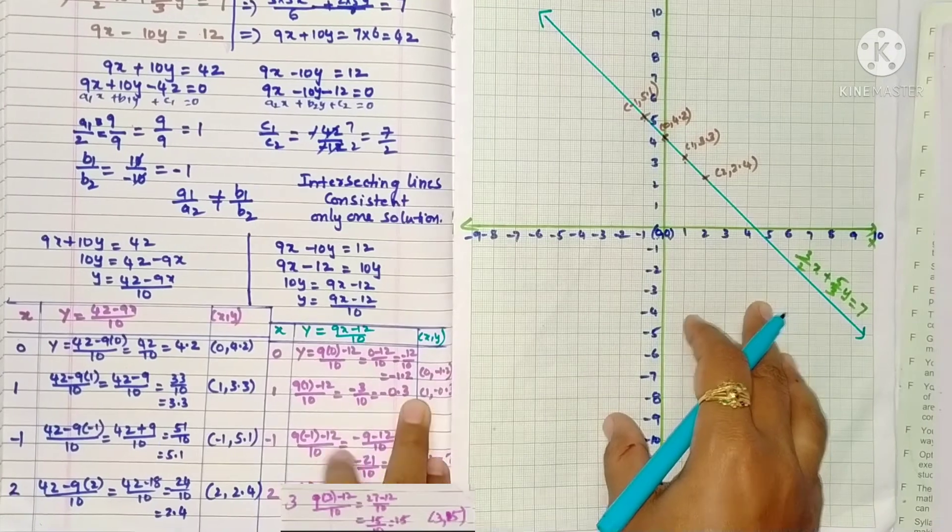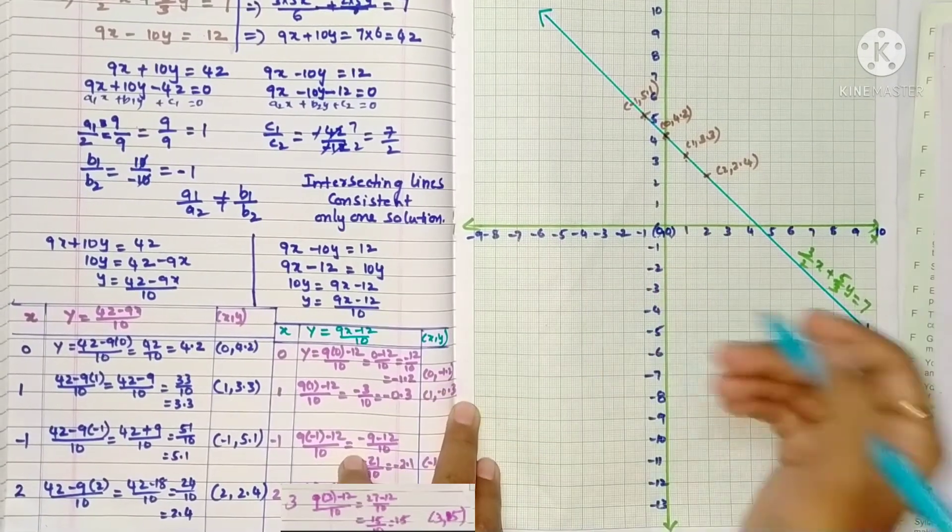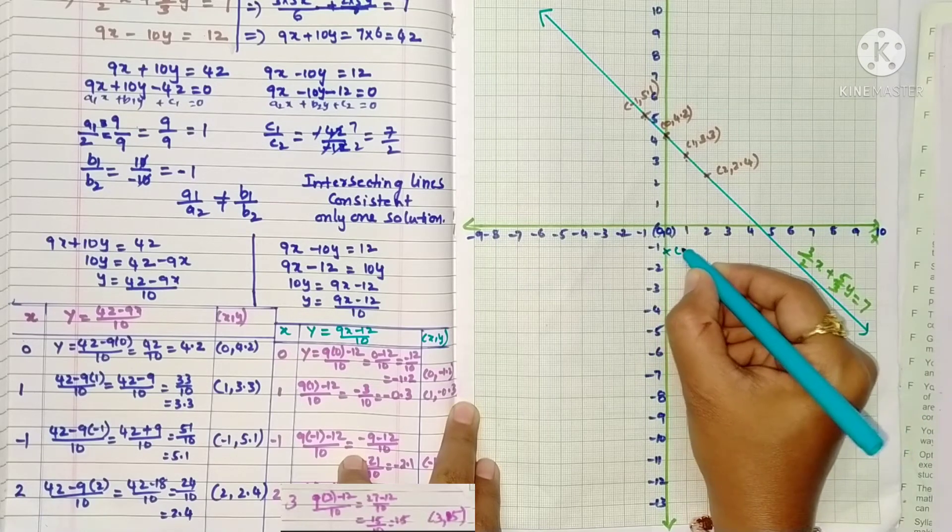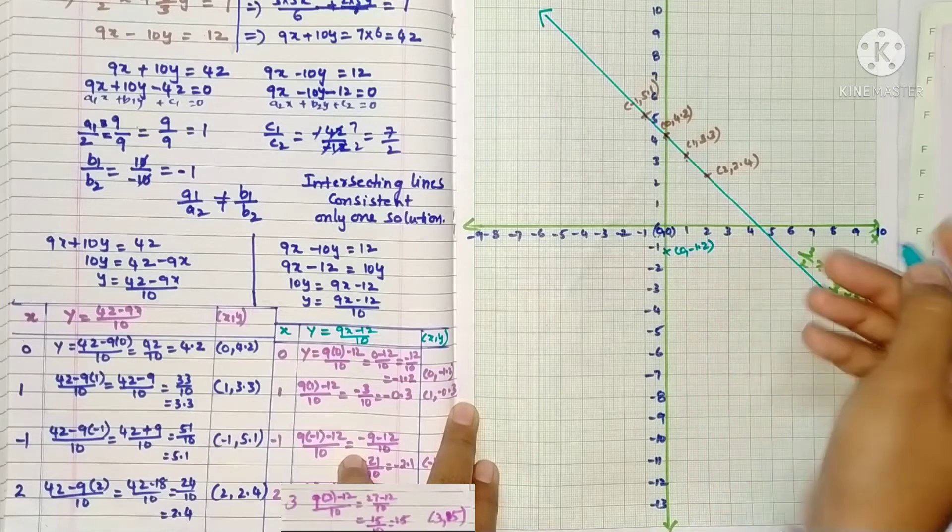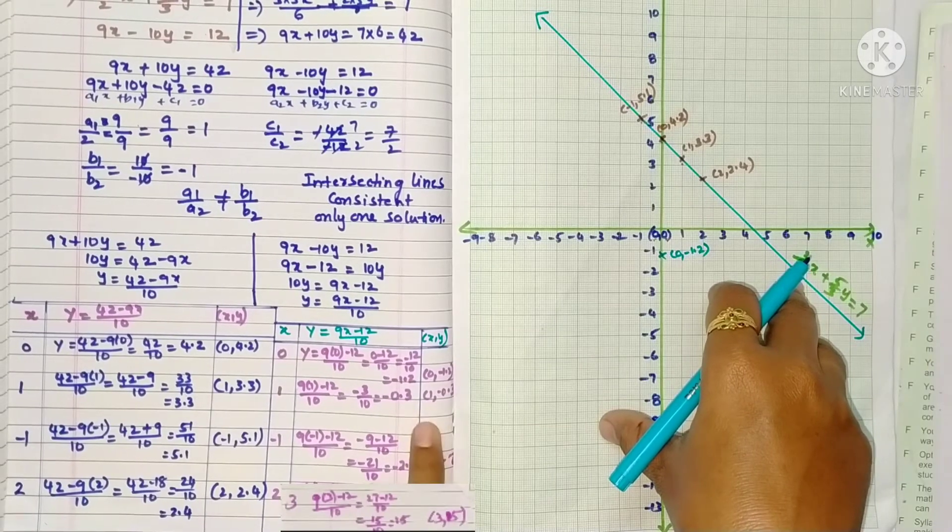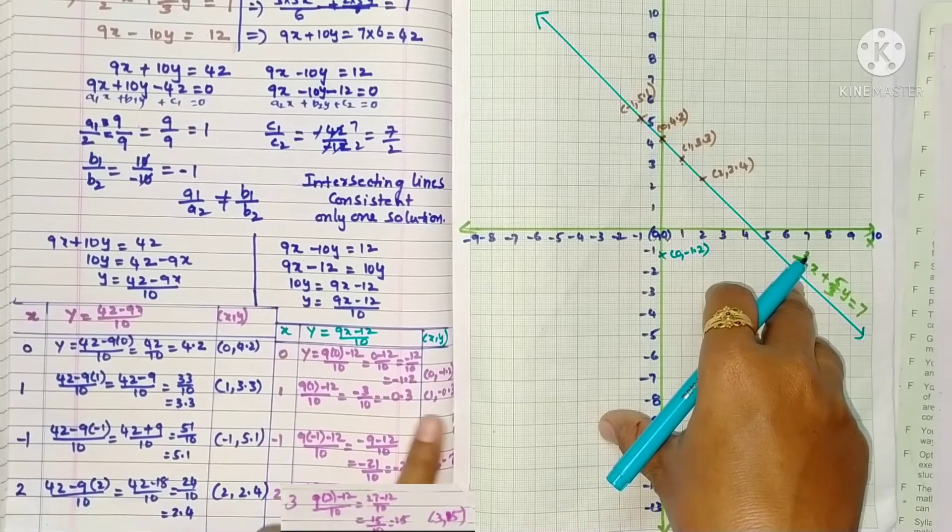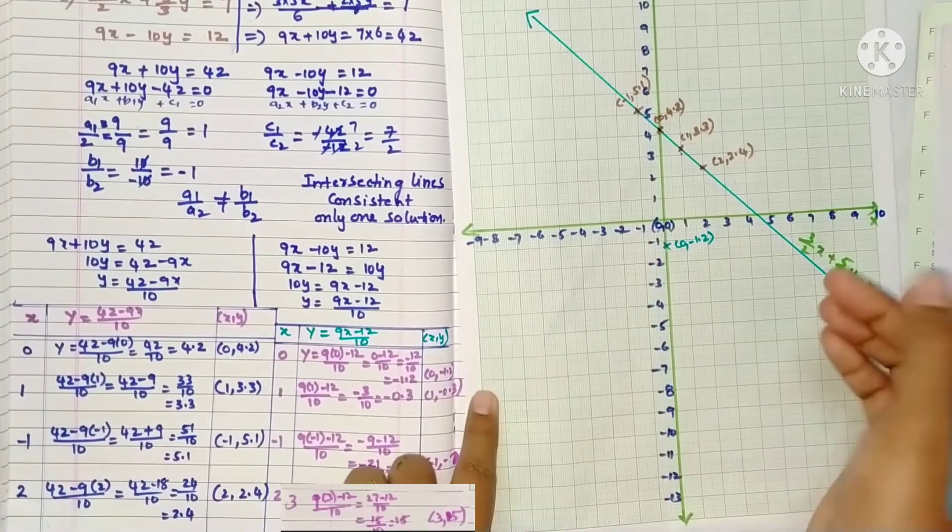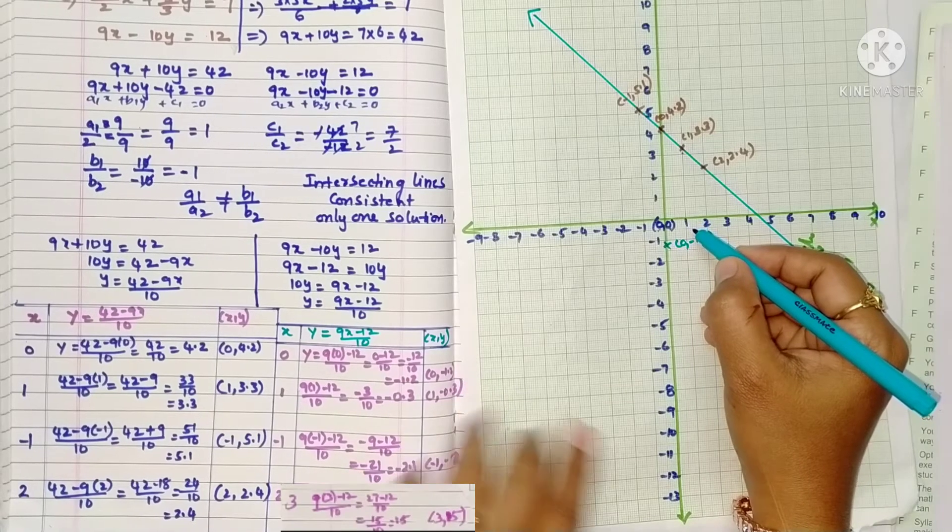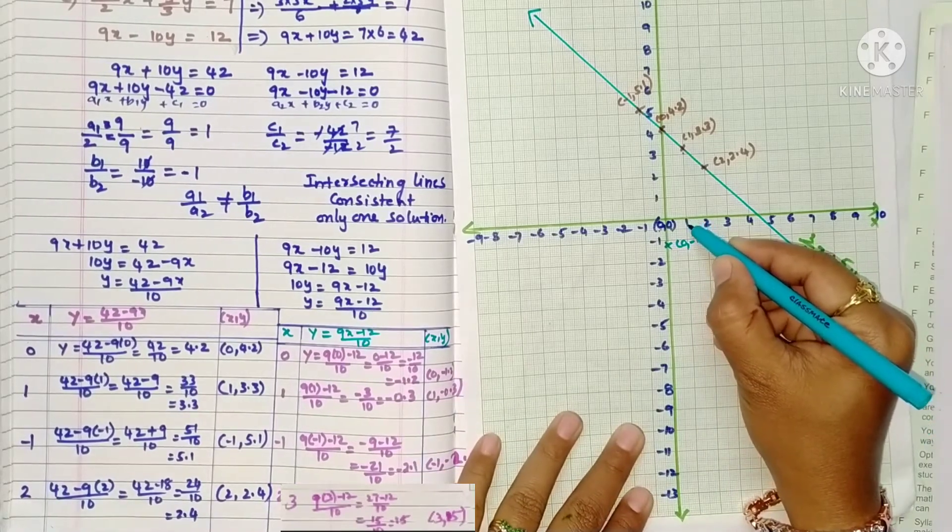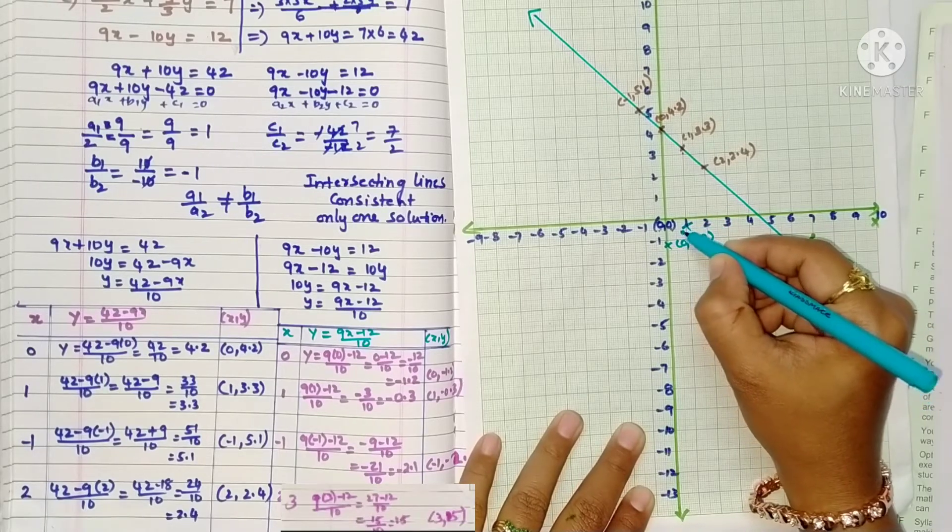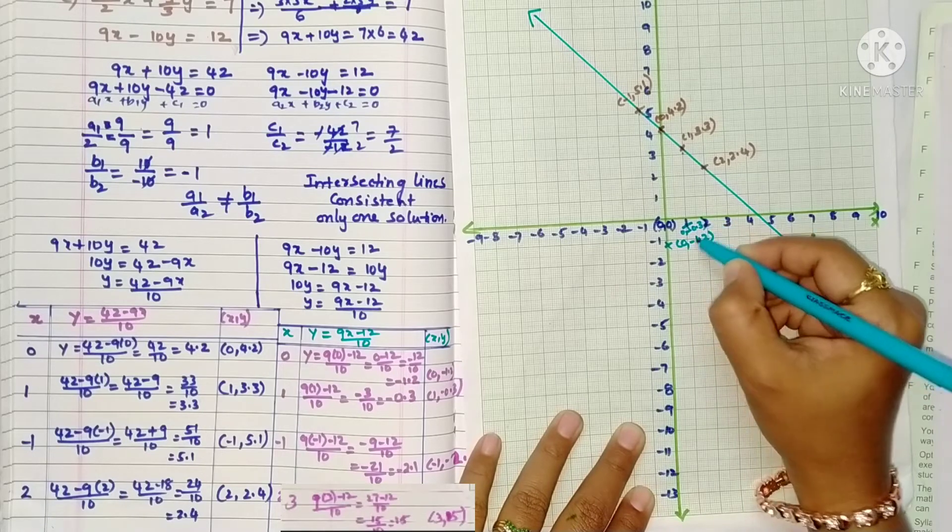Points. First point 0 comma minus 1.2. So after 1, second line here. Next point 1 comma minus 0.3. x value 1, and 0.3 means after 0, third line. Here: 1, 2, 3. So 1 comma minus 0.3.